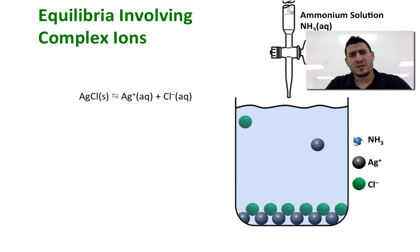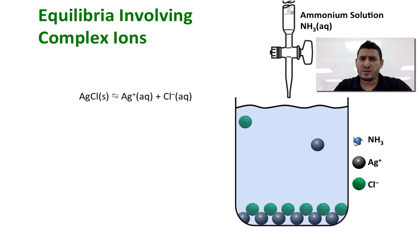Now let's discuss equilibria involving complex ions. Let's consider the saturated solution of silver chloride where a dynamic equilibrium is established between the silver chloride solid and its ions, the silver and the chloride. What happens if I add ammonia solution to this solution?